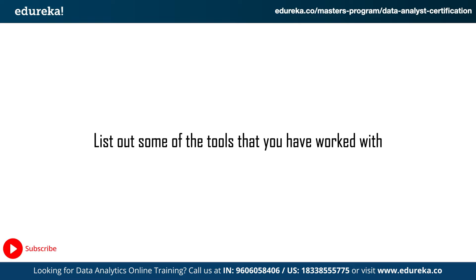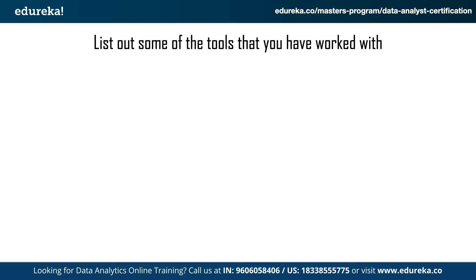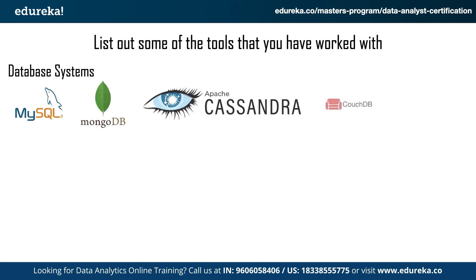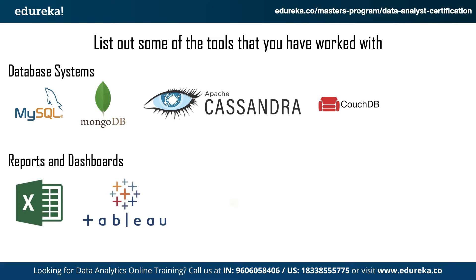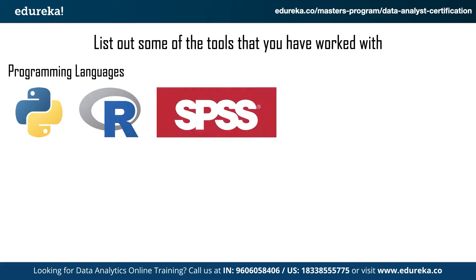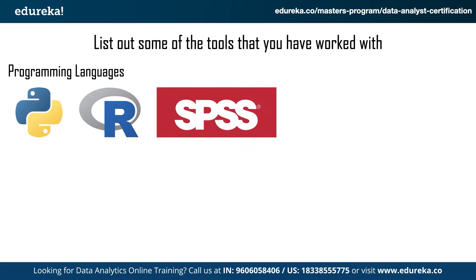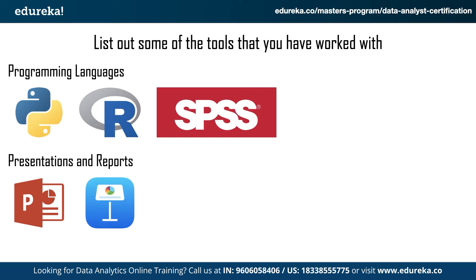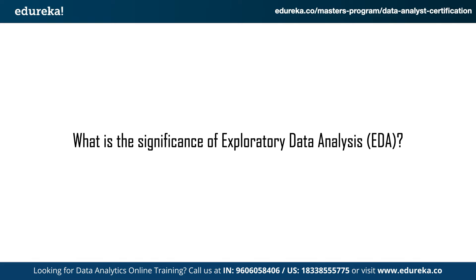The fifth question is: list out some of the common tools that you have worked with. In database systems, you will need to know MySQL, MongoDB, Apache Cassandra, and CouchDB. For reporting and creating dashboards, you will need Excel, Tableau, and Power BI. A data analyst also needs to know how to code — most data analysts use Python, R, and SPSS. Finally, for presentations and reports, you can use PowerPoint and Keynote. During the interview, you can also give examples and use cases of how you've used these tools.